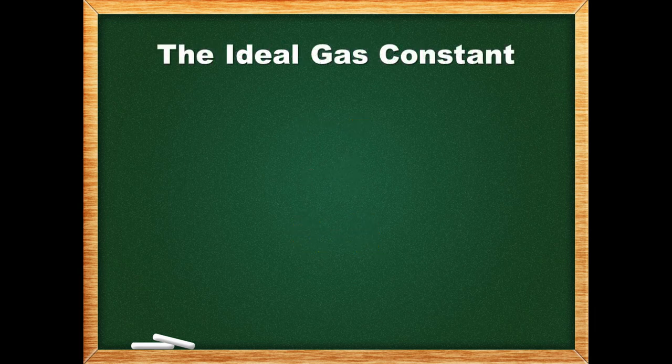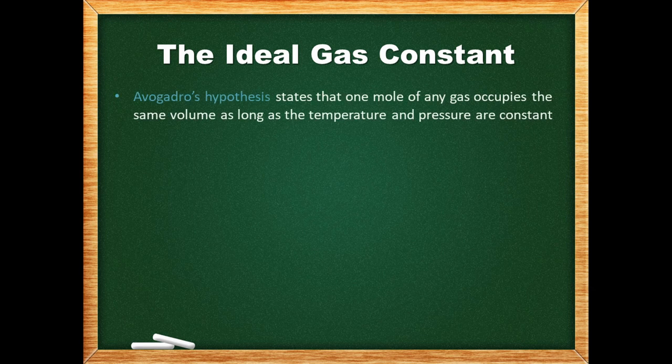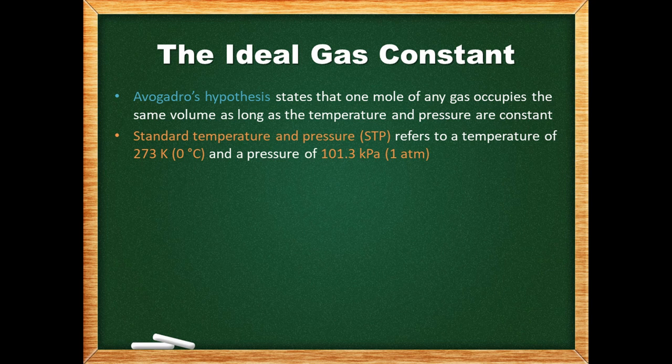Let's look more closely at the ideal gas constant. Recall Avogadro's hypothesis, which states that one mole of any gas occupies the same volume as long as temperature and pressure are constant. Standard temperature and pressure, abbreviated STP, refers to a temperature of 273 kelvins (0 degrees Celsius) and a pressure of 101.3 kilopascals (1 atmosphere). You may also come across SATP — standard ambient temperature and pressure — where the pressure is still 1 atmosphere but the temperature is 25 degrees Celsius. At STP, 1 mole of gas occupies 22.4 liters.